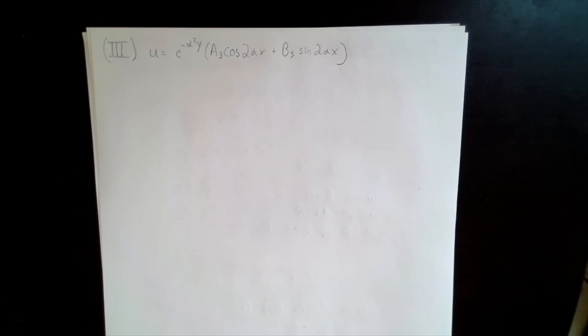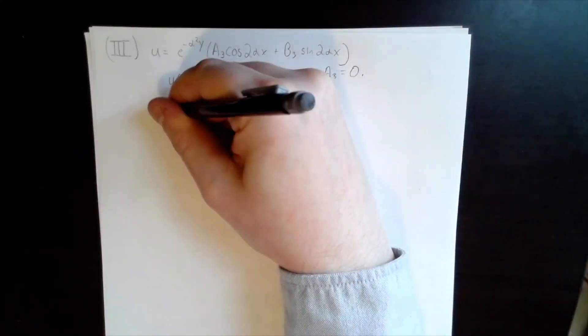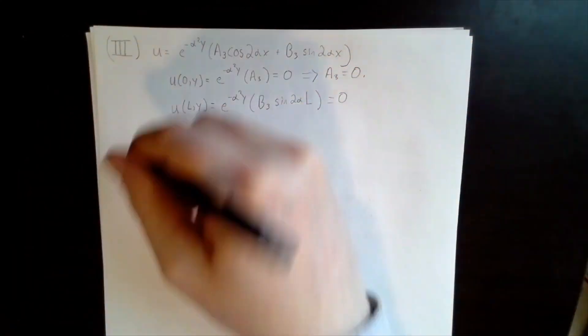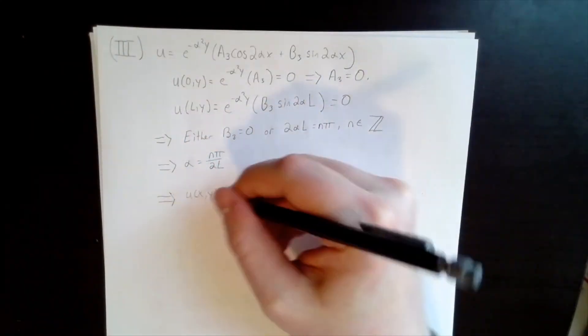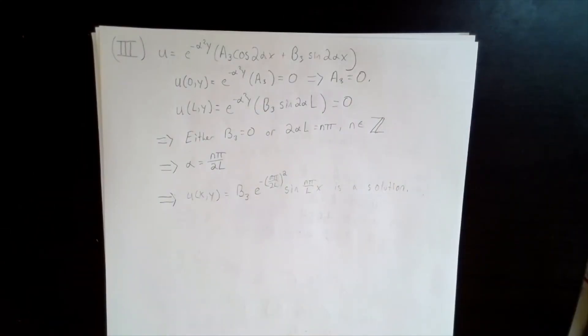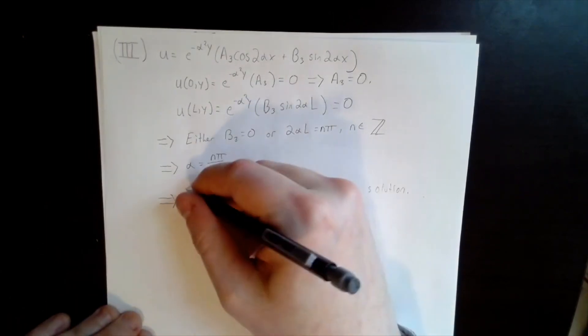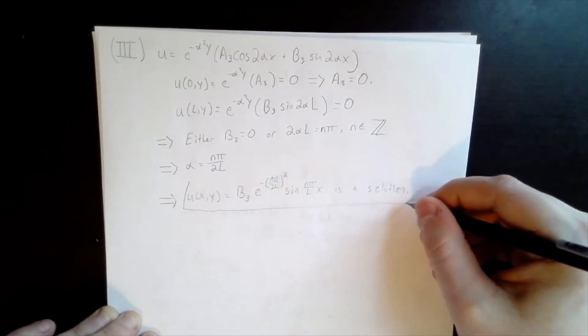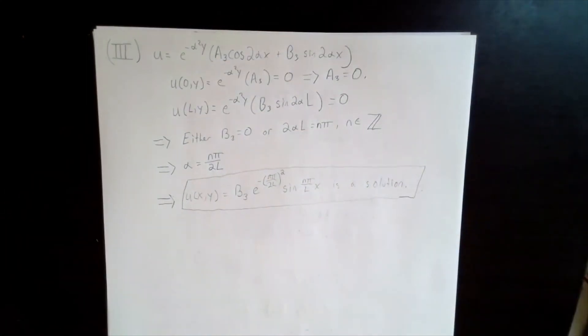Hopefully our third case will yield a more interesting result. Our third family of functions finally yields non-trivial solutions of our boundary value problem. Since the sine term is equal to 0 only when its argument is equal to n times pi, where n is the integer, we can solve for values of alpha which satisfy the boundary condition. This then leaves us with an infinite family of solutions with one free parameter, b3, which all solve our BVP.